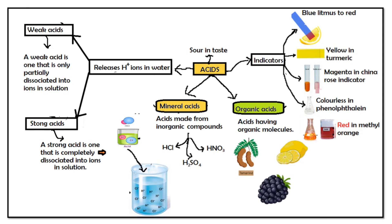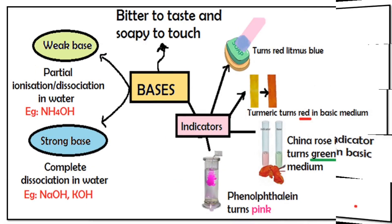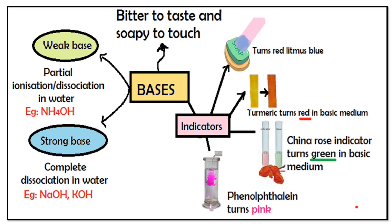Bases are usually bitter to taste and soapy to touch. Based on the amount of dissociation, there are weak bases and strong bases. Weak bases partially dissociate in water, like ammonium hydroxide, whereas strong bases completely dissociate. Bases usually produce OH⁻ ions in water. Bases which are soluble in water are known as alkalies. In indicators, bases turn red litmus blue, make turmeric red, change the china rose indicator to green, and give a pink color in phenolphthalein.